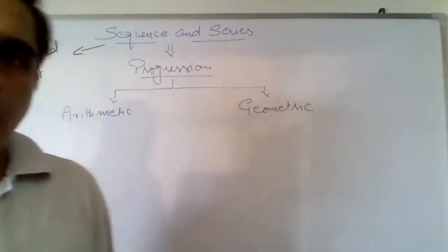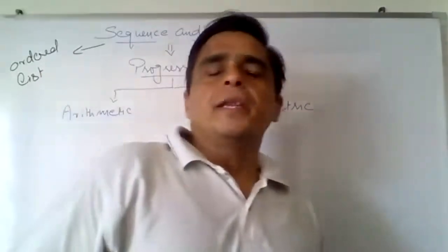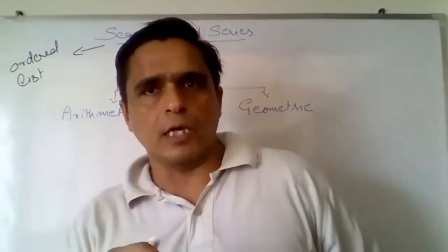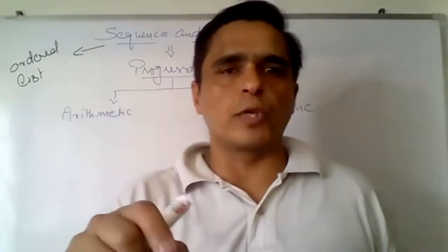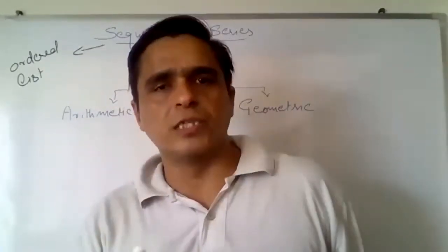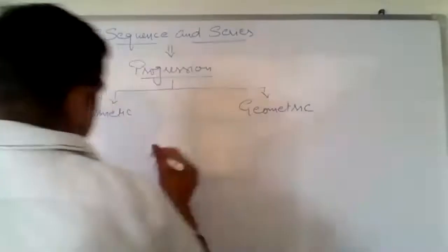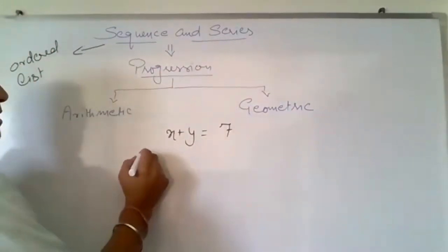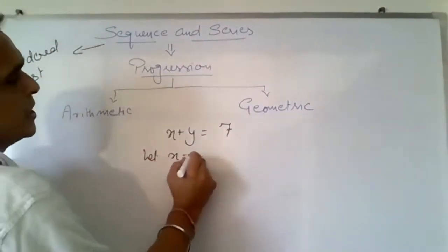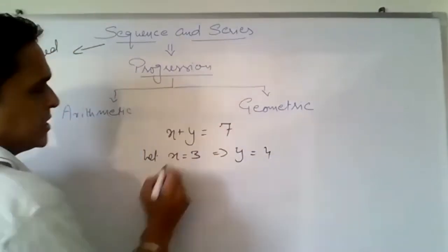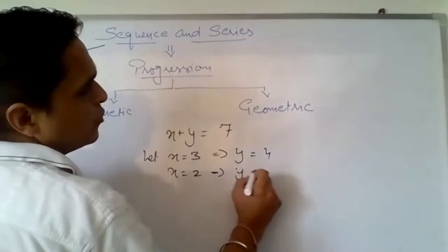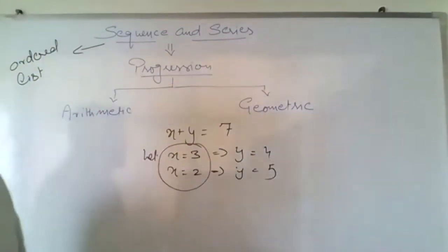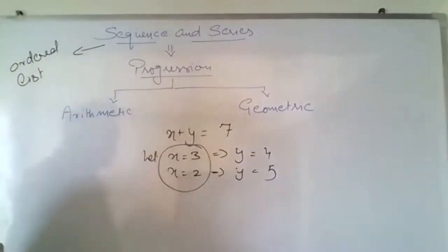Now, what is the meaning of domain? Domain means that if we have a function or a general term given, and if we can put some value in it, then that value is known as the domain of the function. For example, like in class we asked the graph x plus y equals to 7. Let x equal to 3 — correspondingly y is 4. Let x equal to 2 — correspondingly y is 5. So these values are known as the domain of the function.